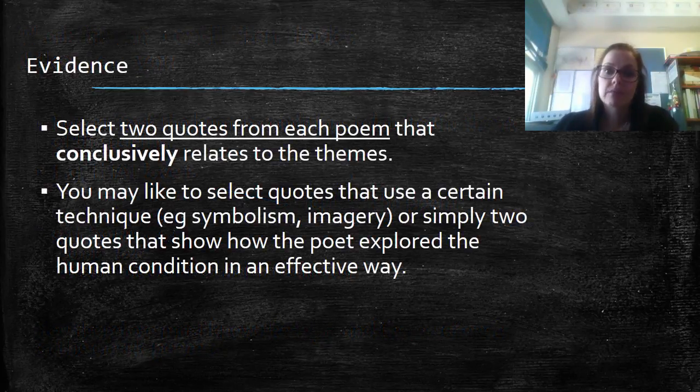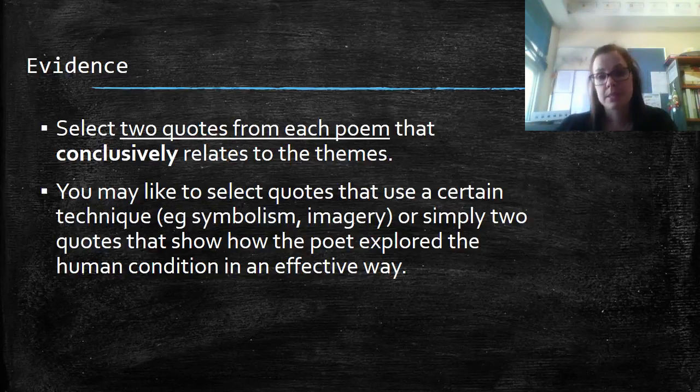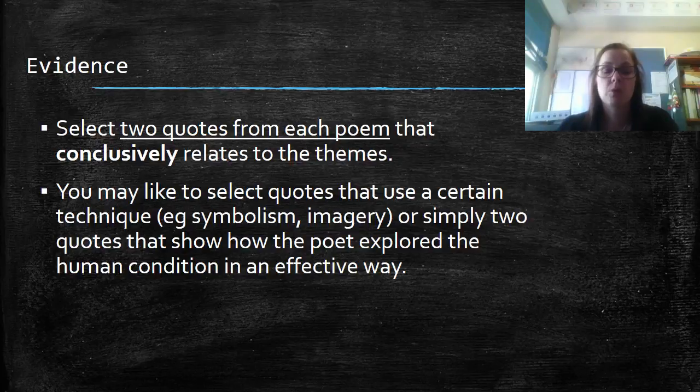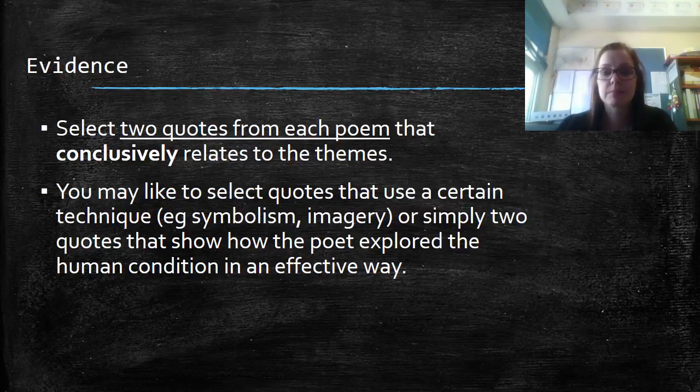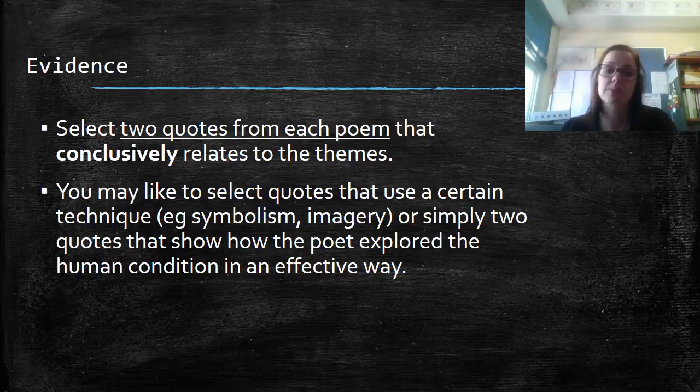Even though you're writing in a feature article genre, you still need to provide evidence to substantiate your point of view. You need to select two quotes from each poem that conclusively relate to the theme. You may like to select quotes that use certain techniques like symbolism or imagery, or simply choose two quotes that show how the poet explored the human condition in an effective way.